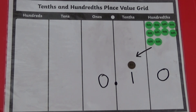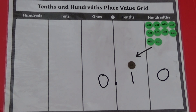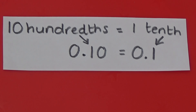On our place value grid, we can't have ten hundredths counters in the hundredths column. Instead, we put one tenth counter in the tenths column. So ten hundredths is the same as one tenth.